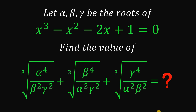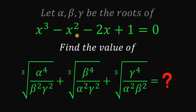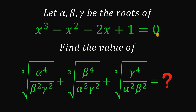Can you solve this math challenge? Here's the question. Let alpha, beta, and gamma be the roots of this cubic equation: x cubed minus x squared minus 2x plus 1 equals 0. Find the numerical value of this expression: cube root of alpha to the fourth power over beta squared times gamma squared, plus cube root of beta to the fourth power over alpha squared plus gamma squared, plus cube root of gamma to the fourth power over alpha squared times beta squared.